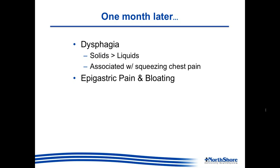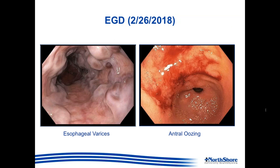Given concern for these ongoing symptoms, it was decided that the patient needed to have an EGD. Here are some images from the EGD. As you can see on the left image, there are very prominent esophageal varices. On the right, you will notice significant oozing of blood in the antrum of the stomach. There were no distinct lesions noticed at this point, and thus the oozing was attributed by the endoscopist to portal hypertensive gastropathy.